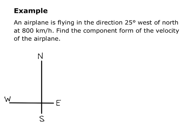So I'm going to start by drawing my north, east, south, and west. And my vector is representing the airplane path 25 degrees west of north. So I know the magnitude of that vector is 800, because that's the speed of the airplane. And I'm going to create a right triangle out of that.